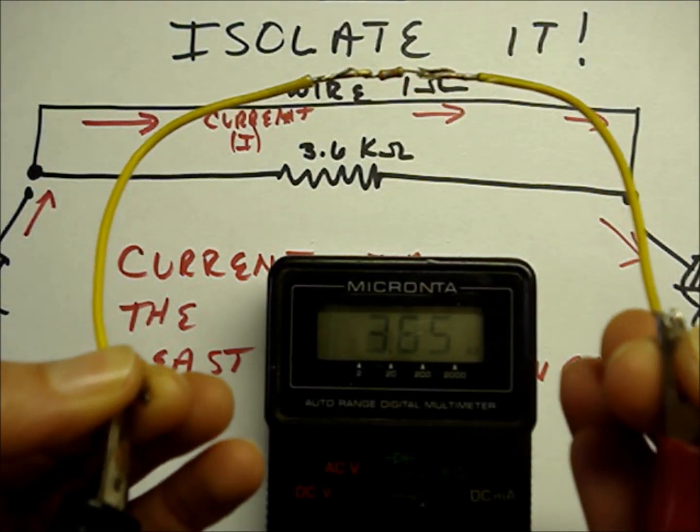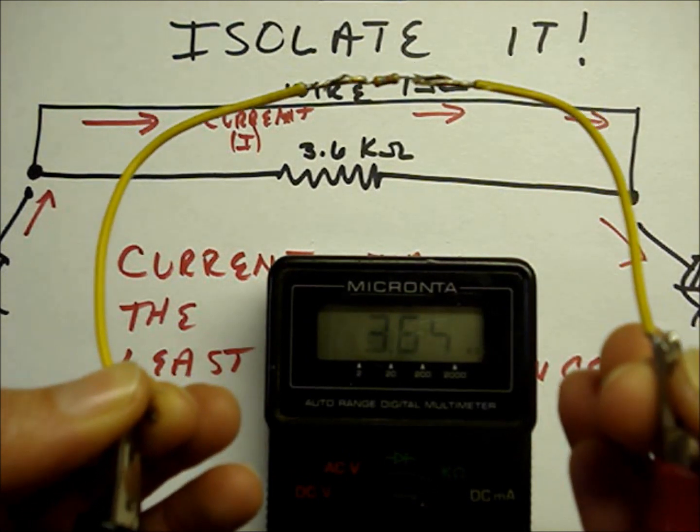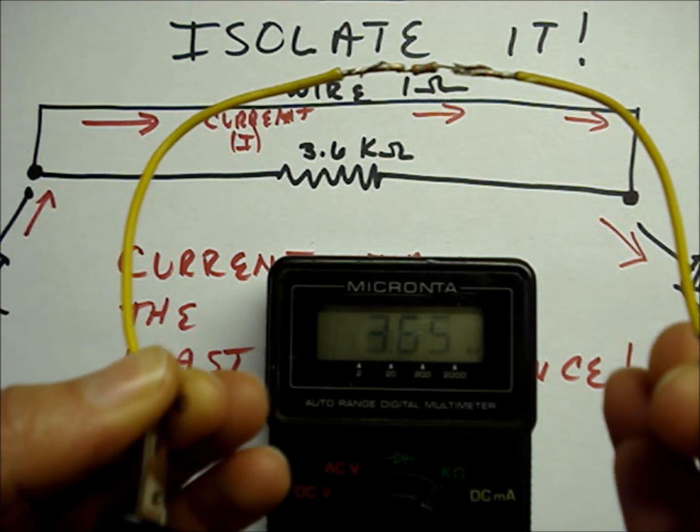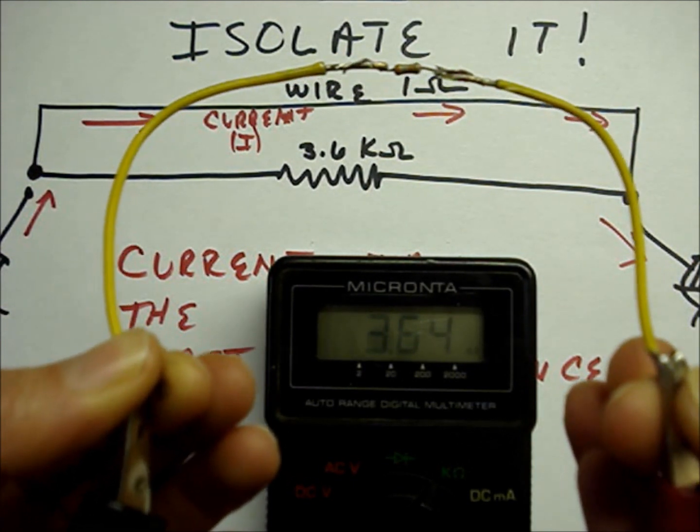Again, the multimeter is going to take the path of least resistance and the current will flow through the 3.6 kohm resistor and not the resistance of my body.